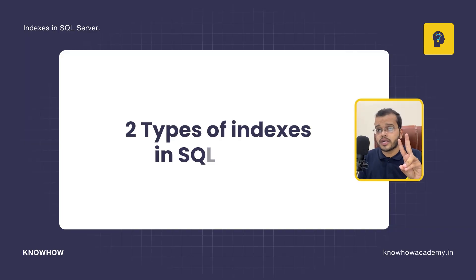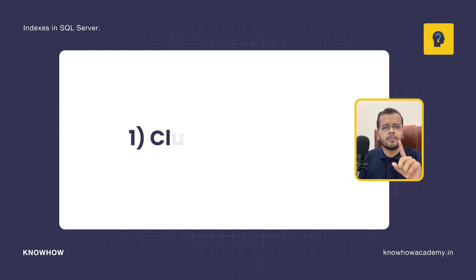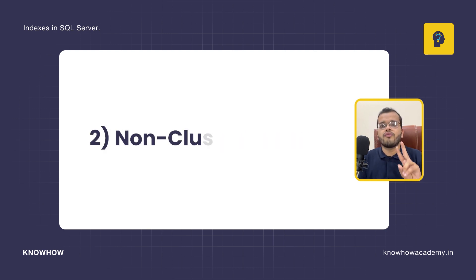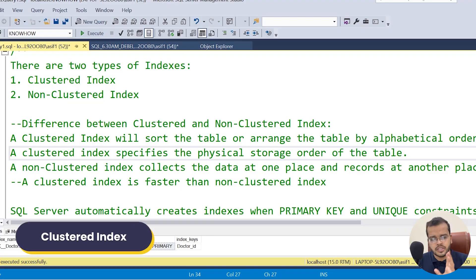So what types of indexes do we have in SQL Server? There are two types: number one, we have clustered index; number two, we have non-clustered index. The difference between these two indexes is very interesting.